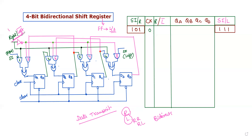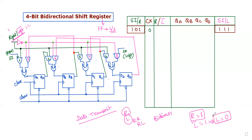Suppose the control input is a single variable R/L-bar. If R/L-bar is equal to 1, that means R equals 1 and L-bar equals 1, so the right-shifting operation is performed. L equals 0, meaning the left-shift operation is disabled. So right shifting is active and left shifting is disabled.